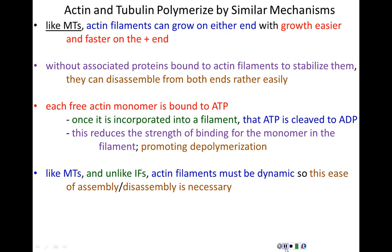Also similar to microtubules and very unlike intermediate filaments, actin filaments are dynamic — they must be dynamic. This ease of assembling fibers and this readiness to disassemble spontaneously is not an accident — it is evolved. That's necessary so that actin can carry out the cellular functions for which it is responsible. It is hugely costly in terms of energy — you burn tons of ATP assembling and disassembling actin filaments — but it is necessary for actin to do the job it needs to do.